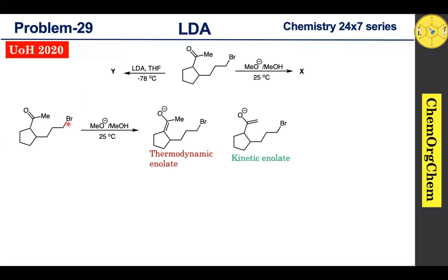When it comes to kinetic enolate, that favors formation under use of bulky bases and lower reaction temperature. So coming to our reaction condition — our condition is an alkoxide base — so definitely this reaction condition produces thermodynamic enolate. Compared to kinetic enolate, thermodynamic enolate is more stable because it contains a more substituted alkene.